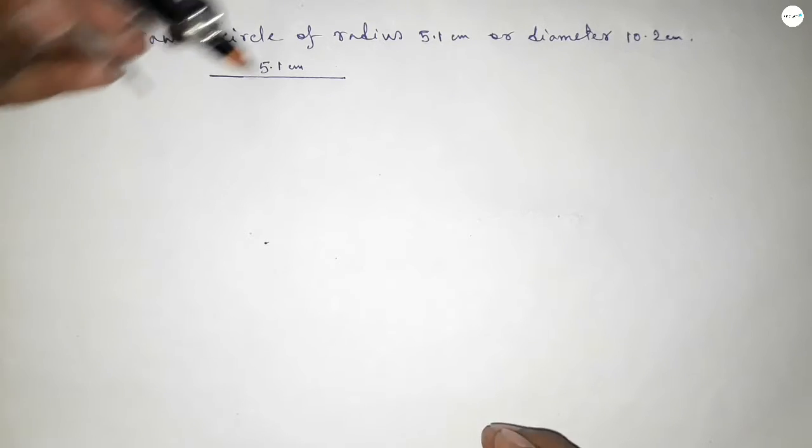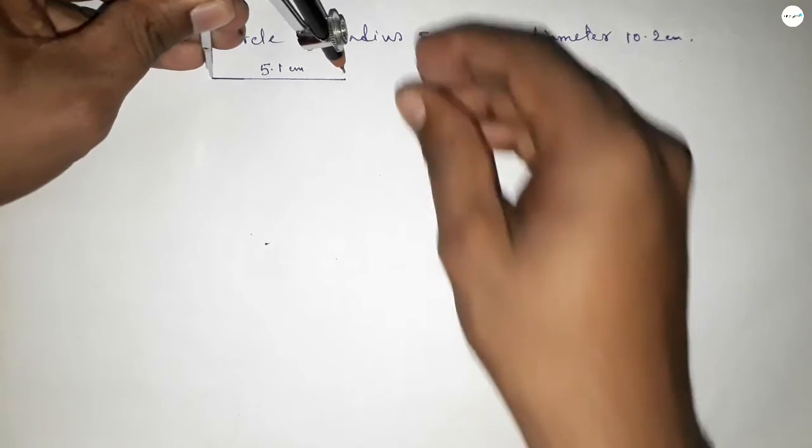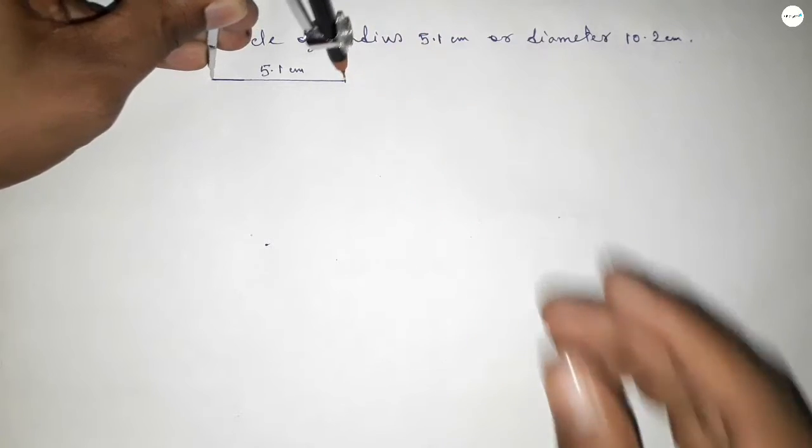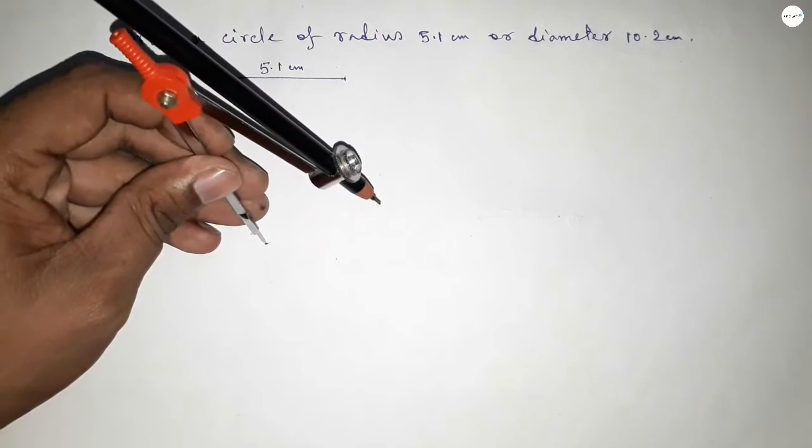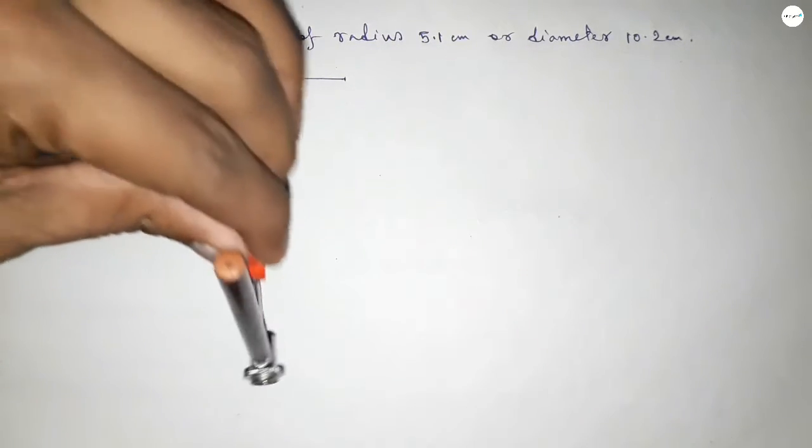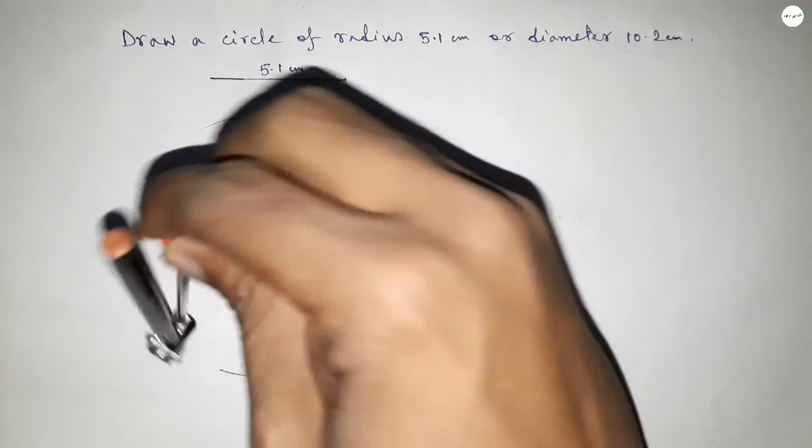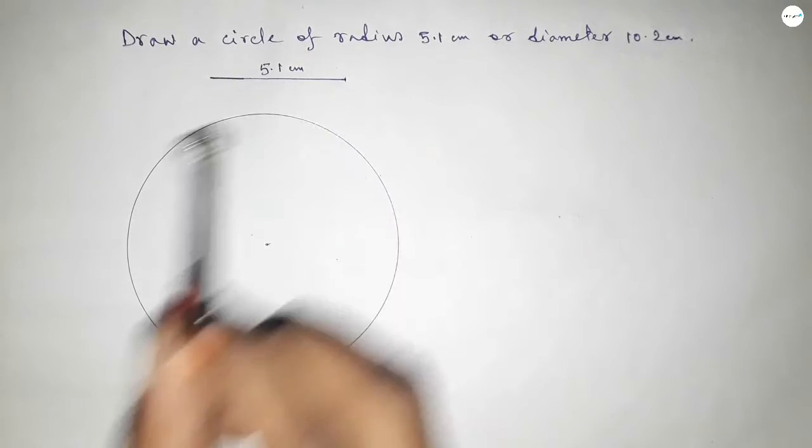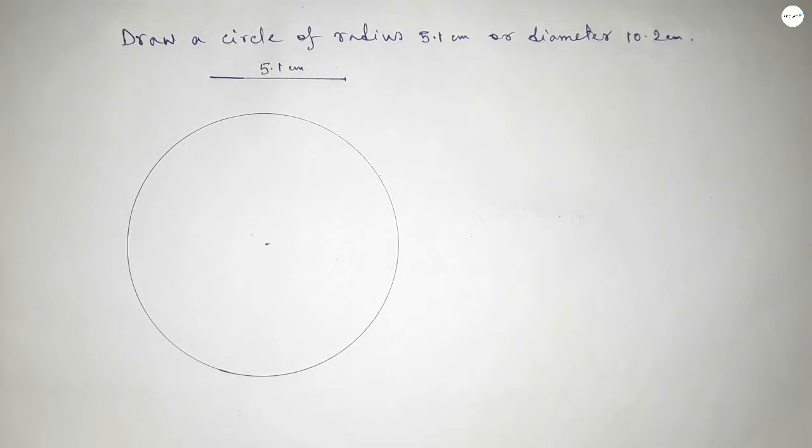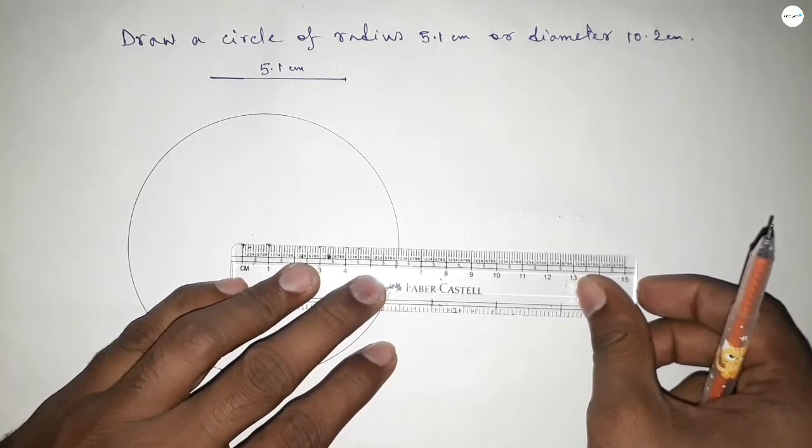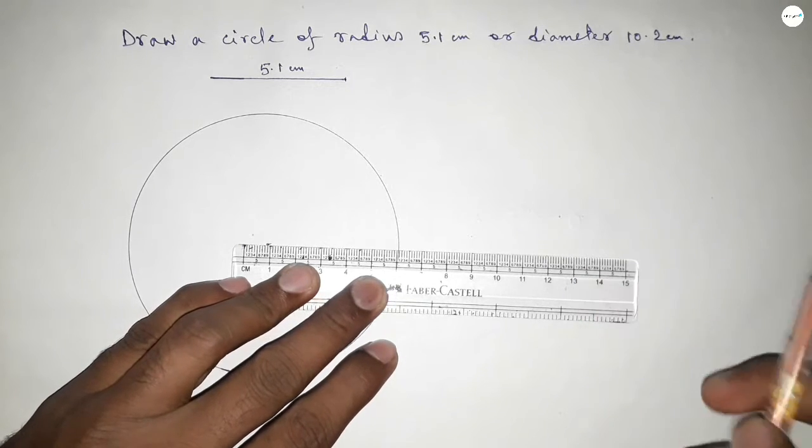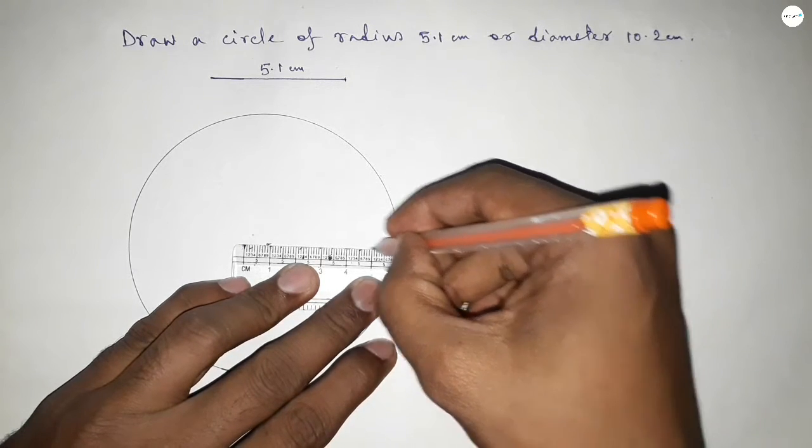Next, taking the length 5.1 centimeter by using compass and putting the compass on the point here and drawing here an arc by this way, which represents a circle with radius 5.1 centimeter. Now joining this one up to center.